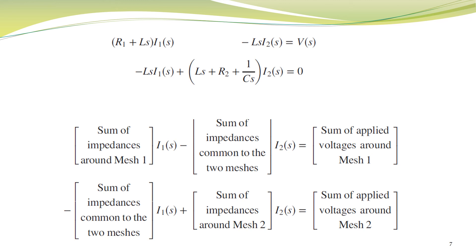Thus, we can get rid of even applying KVL and quickly write the equations describing the electrical network. However, remember one important thing: this shortcut is applicable only if the directions of current are as shown in the figure on the previous slide. Otherwise, we have to make some changes in the signs of the terms in these equations.